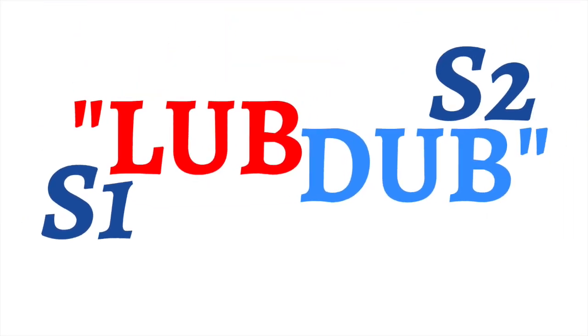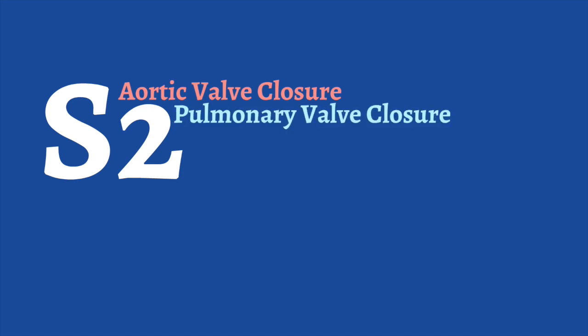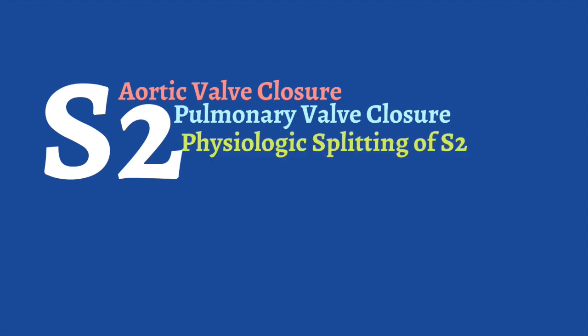Now let's talk about S2. S2, or the second heart sound, is created by the closure and flow of blood past the aortic and pulmonary valves. Just as with S1, S2 has two components: the closure of the aortic valve and the closure of the pulmonic valve. Unlike S1, the splitting of the components of S2 is more prominent and more easily heard. S2 is split into A2, representing the aortic valve component, and P2, representing the pulmonic valve component. Widening and narrowing of the normal split of S2 helps us diagnose physiologic and anatomical abnormalities of the heart.